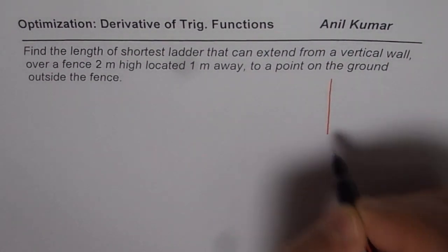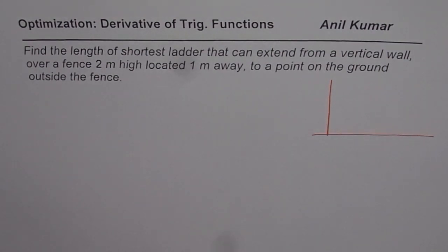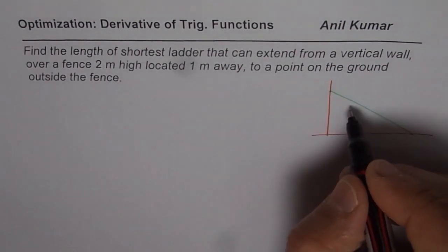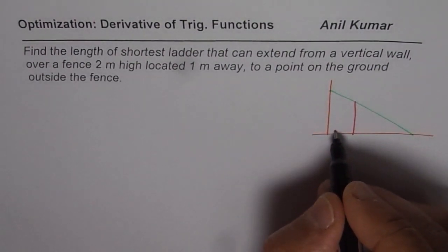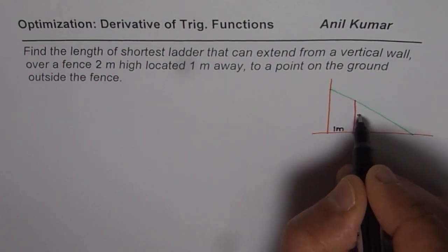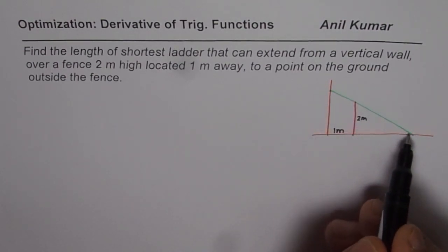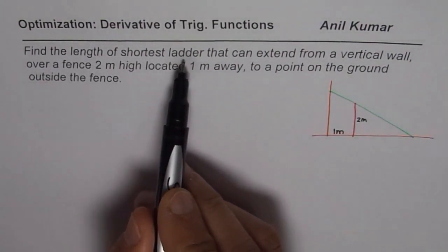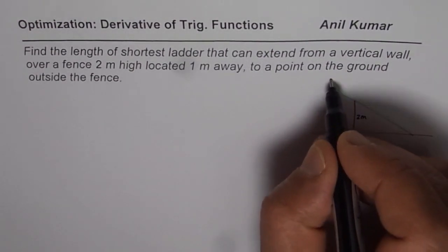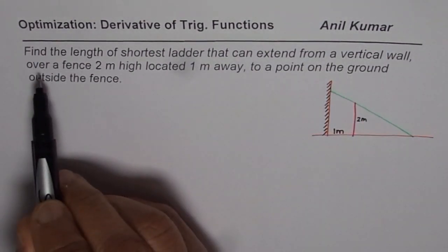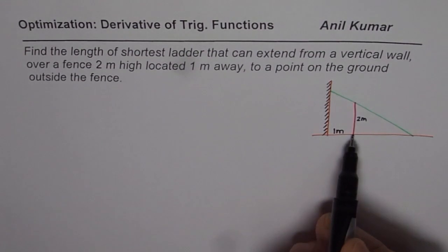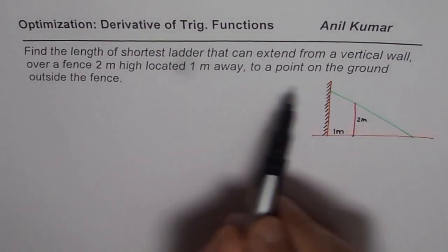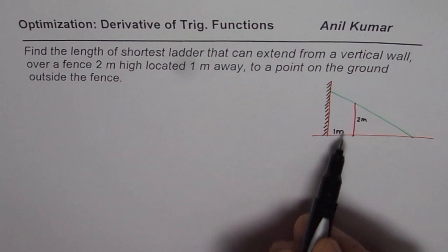Let me make a diagram to represent the situation clearly. We have a ladder, and in between there is a fence which is two meters high and one meter away from the wall. The ladder extends from the vertical wall over the fence to a point on the ground outside the fence.